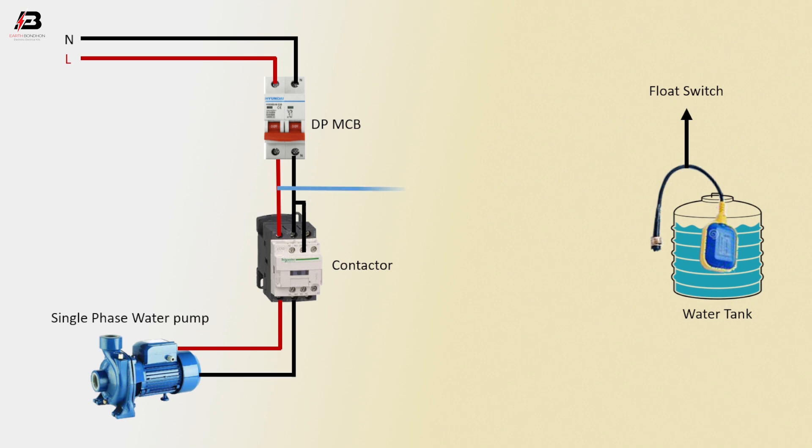Phase connection from DP MCB and connect to float switch. Phase connection outgoing from magnetic contactor inner point to connect with float switch.